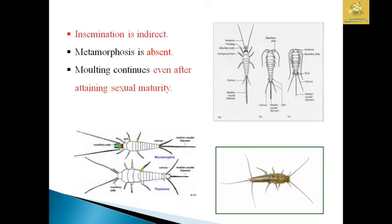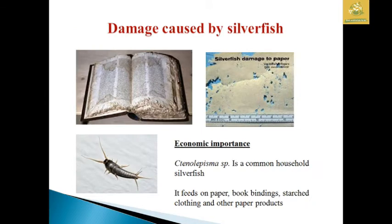Insemination is indirect and metamorphosis is absent in this type of insect. Molting continues even after attaining sexual maturity. The damage by Silverfish can be seen in old books where they scrape and feed on paper, book binding, and scratch cloth as well as other similar products.